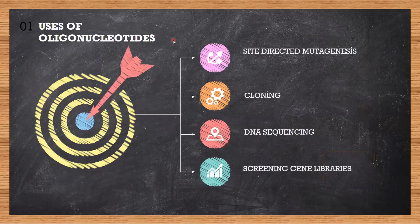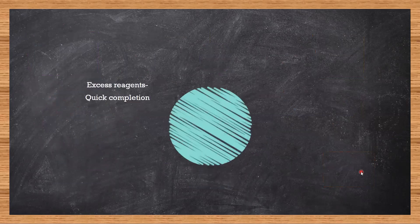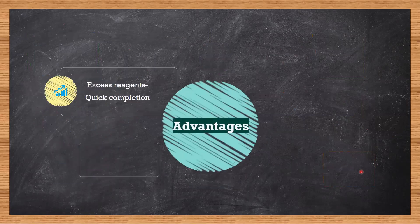Why do we need to make all these oligonucleotides? First of all, oligonucleotides are required for site-directed mutagenesis, that is adding mutations at known positions, for cloning, DNA sequencing, and sequencing gene libraries. So it has wide application in biology.